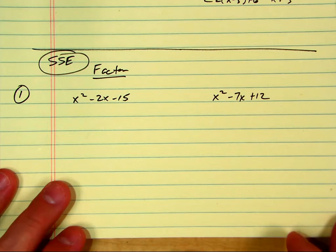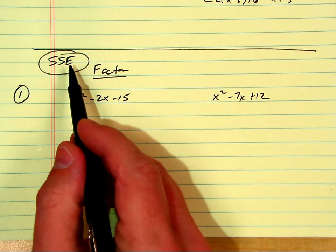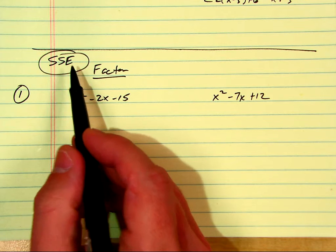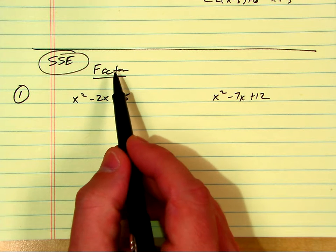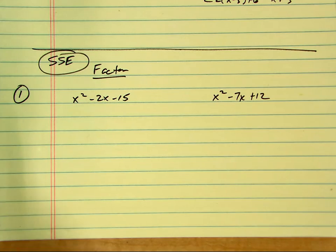Alright, here's the first video for SSE standard. SSE stands for Seeing Structure with Expressions. Basically, in all of mathdom, seeing structure with expressions is basically factoring. So every possible way we learn how to factor, that's what's going to be on these four videos.